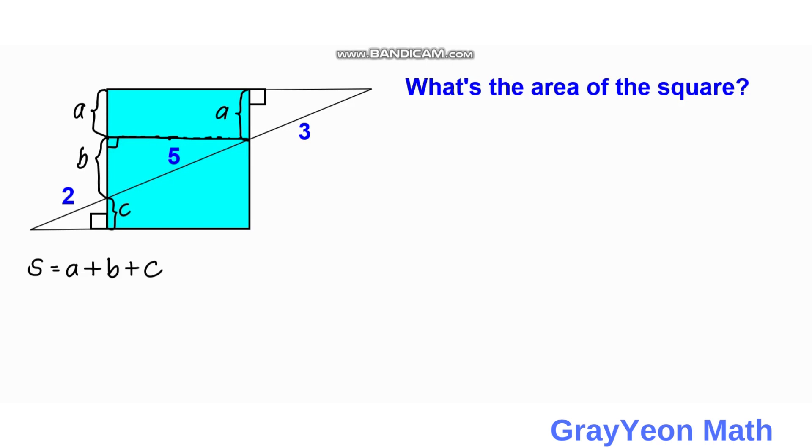Next, we notice that the lengths A, B, and C are the shorter legs of these three right triangles: three, five, and two respectively. So we can say that since they are in proportion, they have the same ratio. So A over three is equal to B over five is equal to C over two.